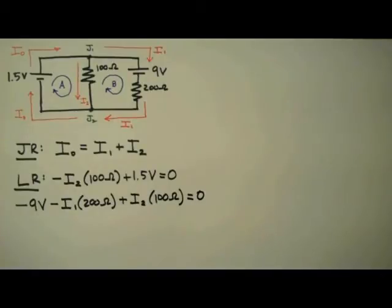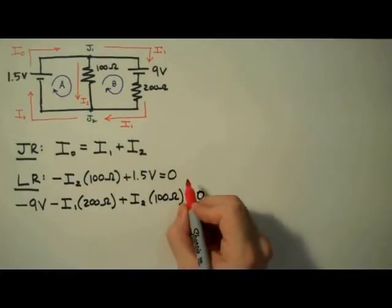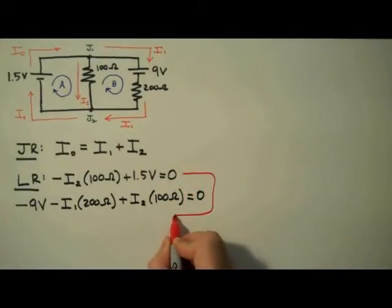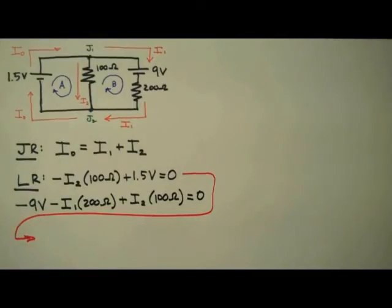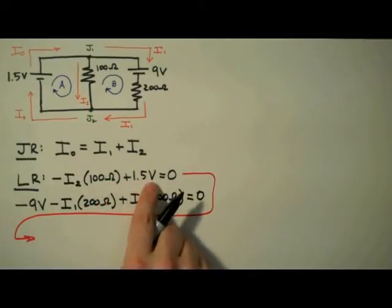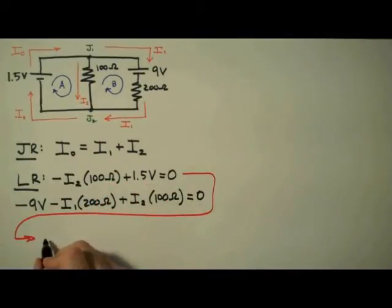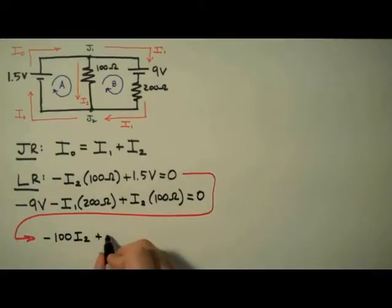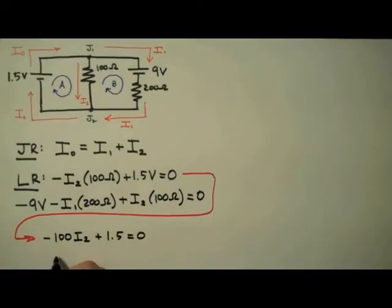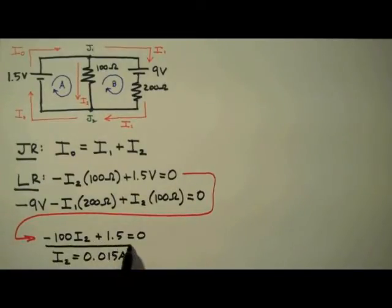At this point, the physics of determining the current in this problem is done. All that's left is some algebra. We have three equations, three unknowns. I'm going to start with the middle equation and solve for I2. I'm going to drop the units — this is pretty much the only time I ever do this, but when using Kirchhoff's rules it makes the equations much easier to handle. So I2 is equal to 0.015 amps, or 15 milliamps.